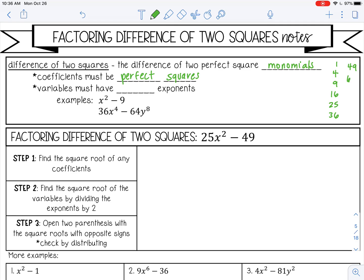So 7 times 7, 8 times 8 is 64, 9 times 9 is 81, 10 times 10 is 100, 11 times 11 is 121, and then 12 times 12 is 144. So those are the numbers that we're going to be looking for, and then the variables must have even exponents.